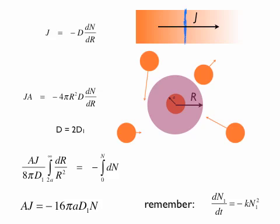You integrate this thing and then you get ΔJ equals minus 16πaD₁N, which is the frequency of collision of all particles with the central sphere.